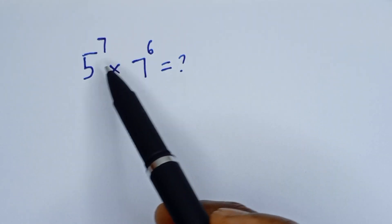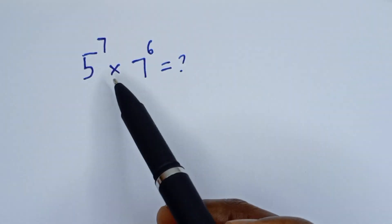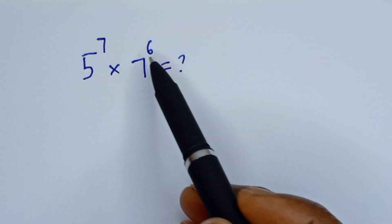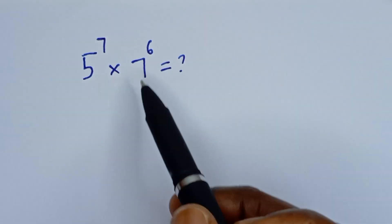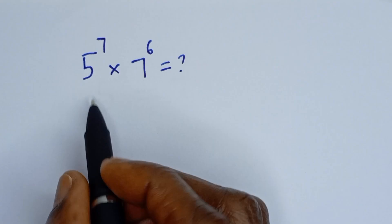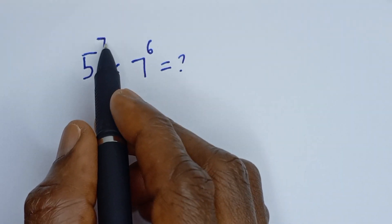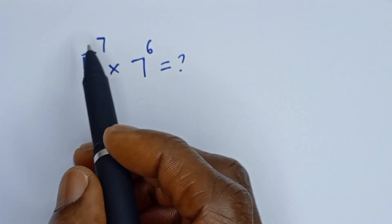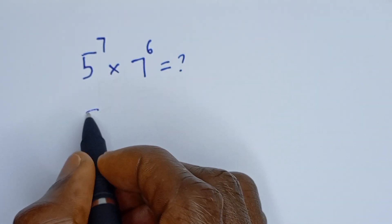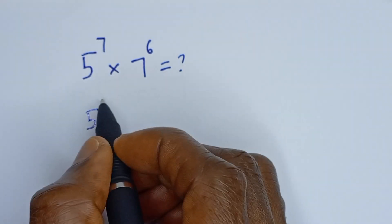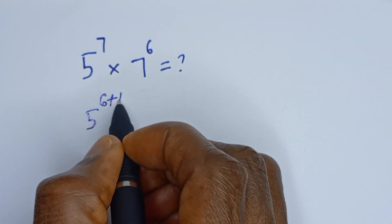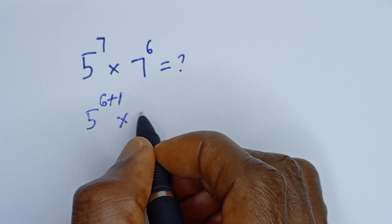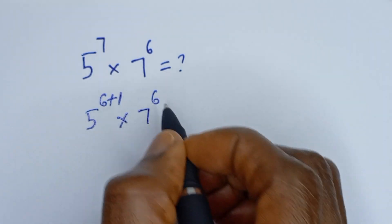Hello. How to simplify this math problem: five to the power of seven multiplied by seven to the power of six, without using a calculator. Five to the power of seven can be written as five to the power of six plus one, multiplied by seven to the power of six.